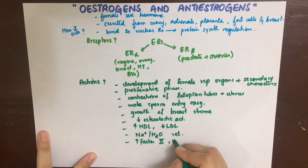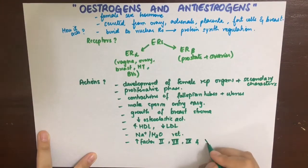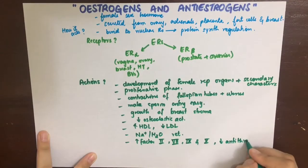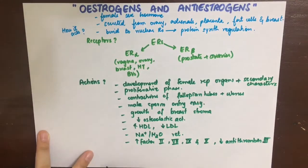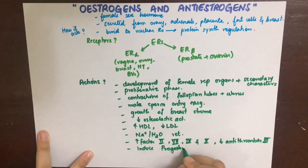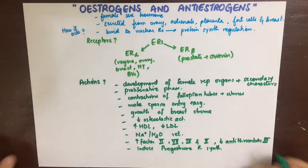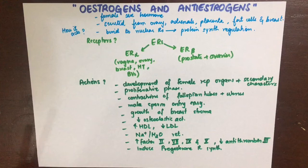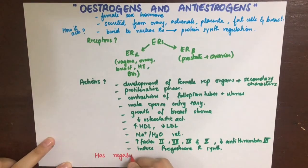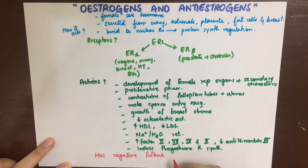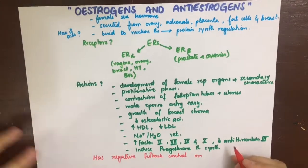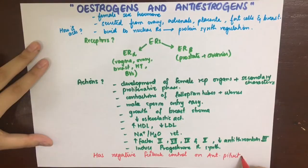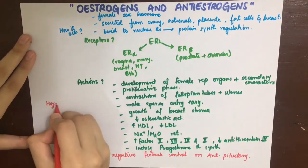Estrogen decreases osteoclastic activity and thus prevents osteoporosis in premenopausal women. It increases HDL (good cholesterol) and decreases LDL, which is why premenopausal women have a lower risk of developing cardiac diseases. It also causes sodium and water retention leading to edema, and enhances coagulability by increasing factors two, seven, nine, and ten — this is a major side effect of estrogen analogs.